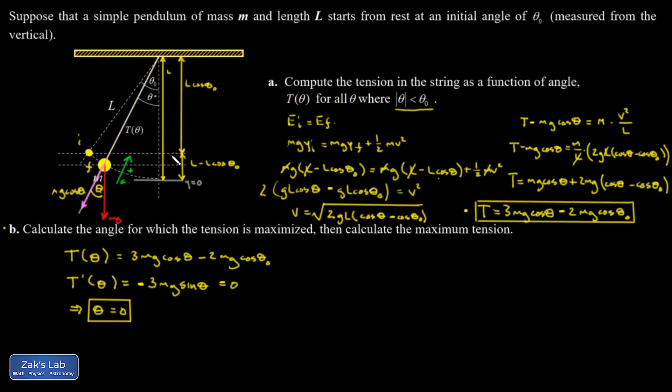So it's at the minimum height. What is the tension there? So T of zero. I'm going to plug back into my original tension function and I get 3mg cosine of zero minus 2mg cosine theta naught. The cosine of zero is one, so I end up with T of zero. This maximum tension, if I start at an angle of theta naught, is going to be 3mg minus 2mg cosine theta naught.